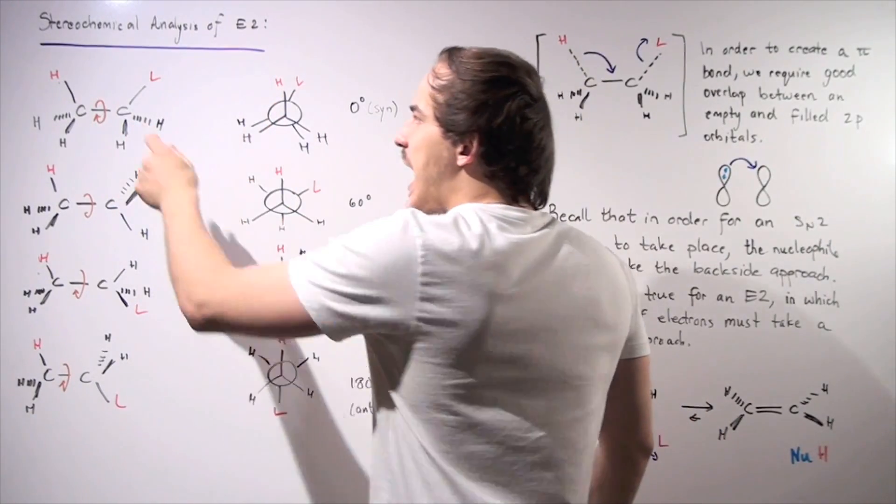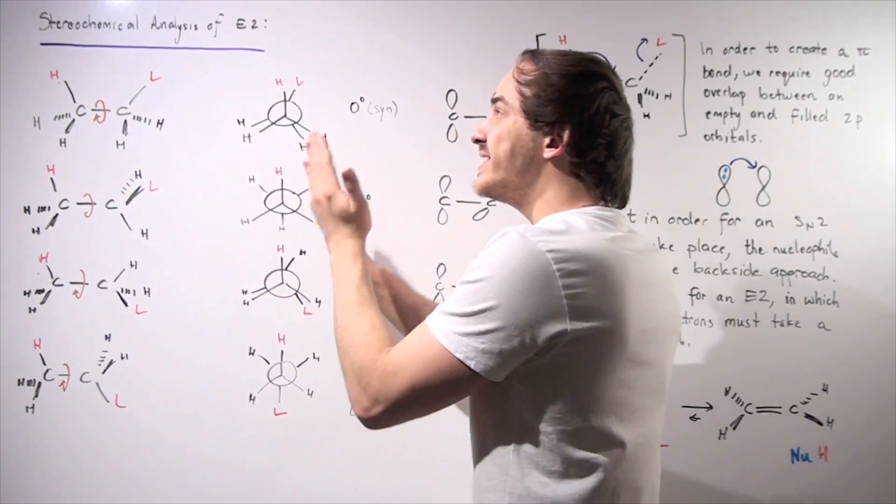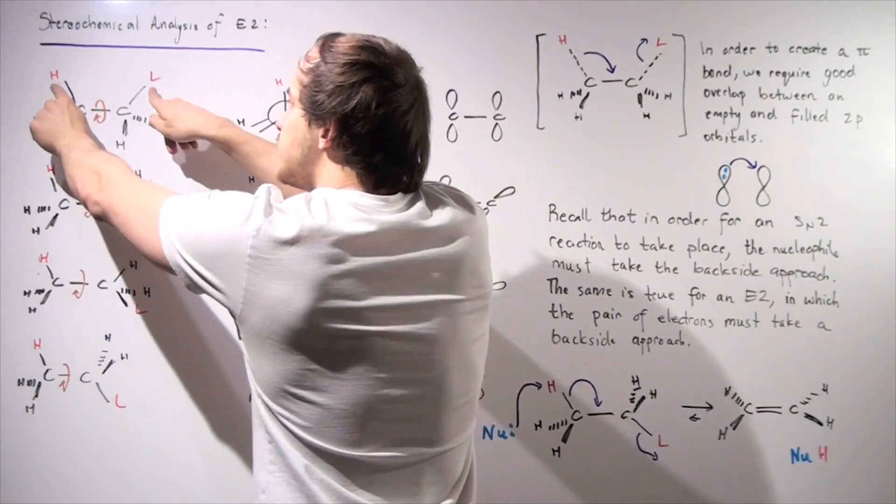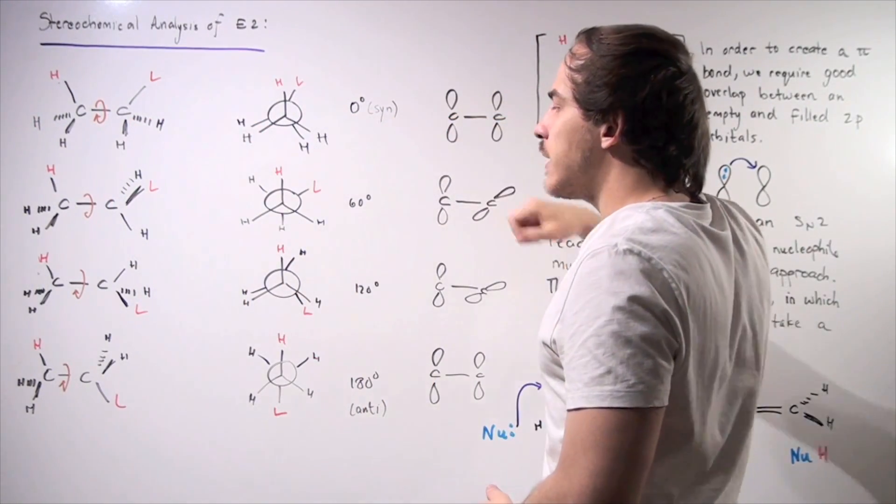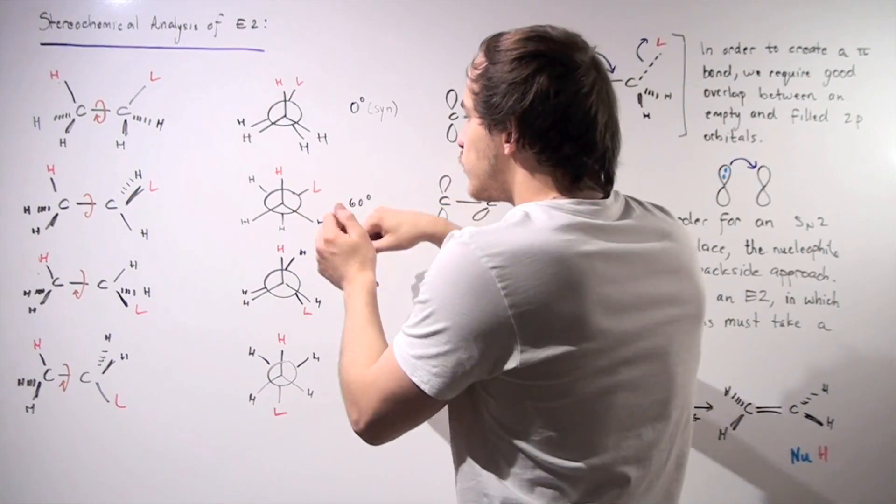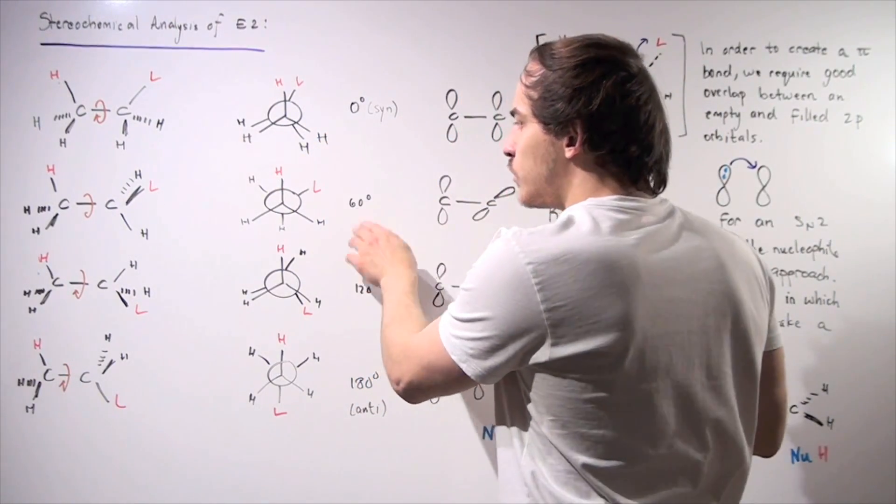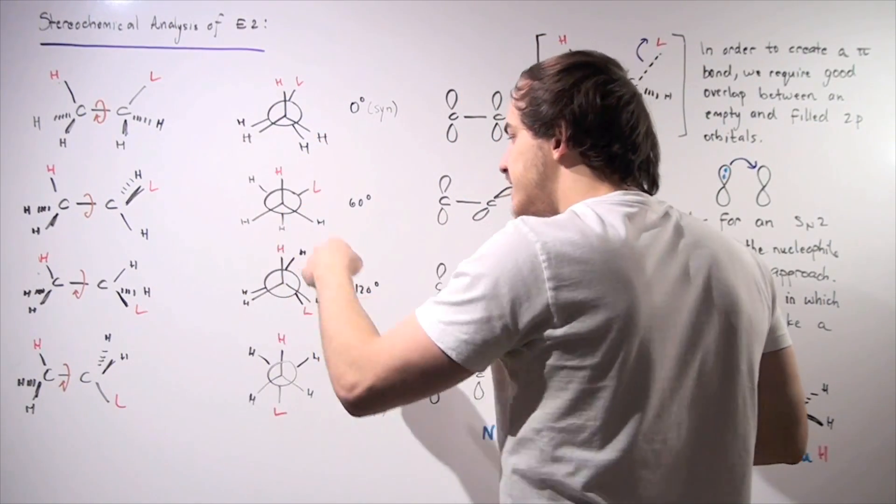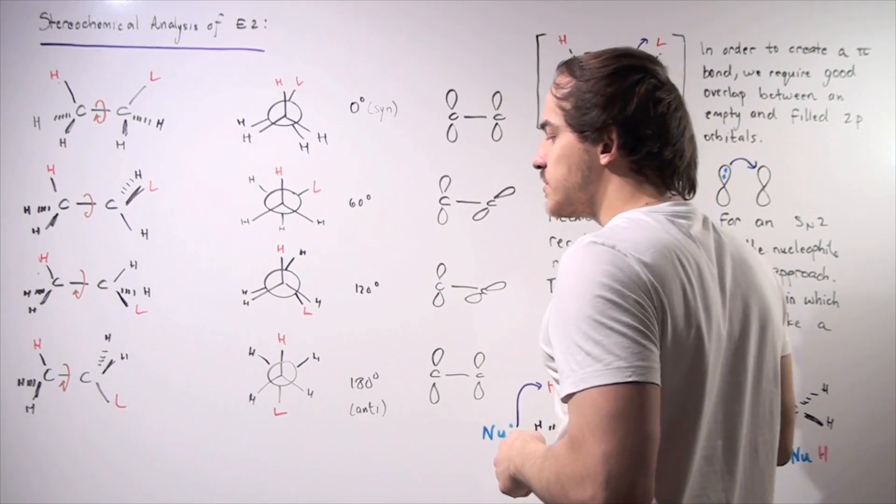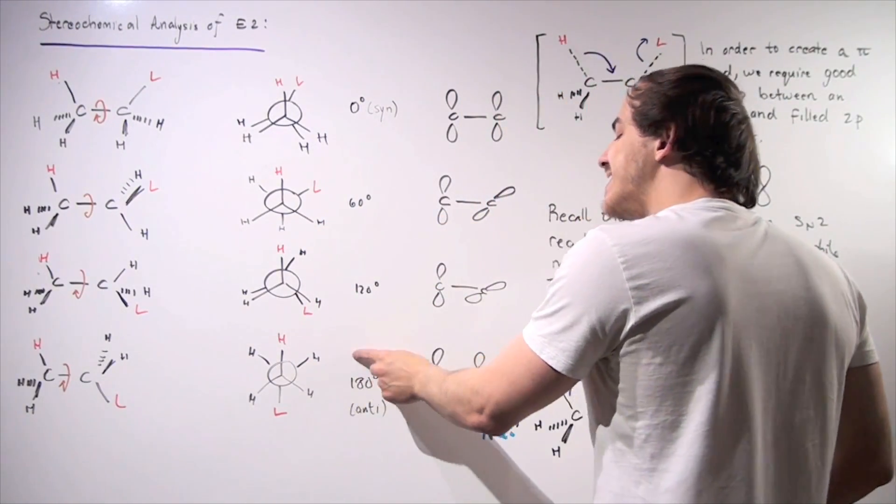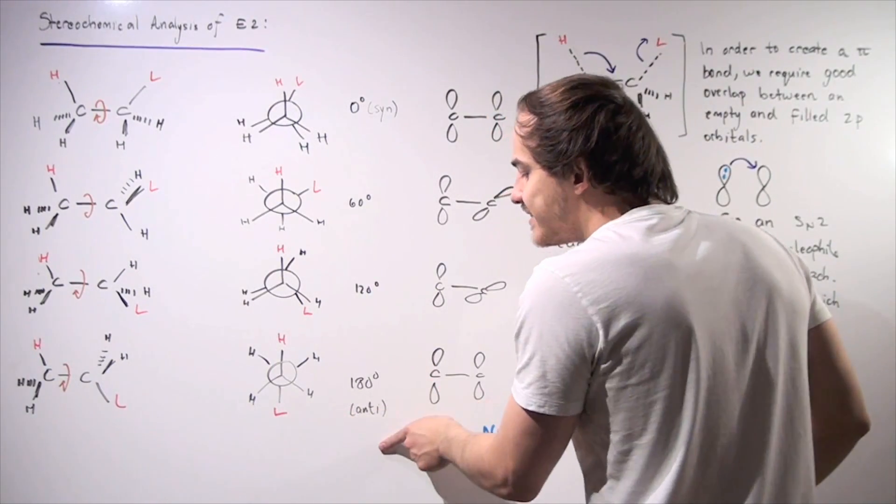So in this projection, our H and L atoms are on the same exact plane. These bonds are on the same plane, so we have zero degrees, also known as syn conformation. Next, we have 60 degrees apart, then 120 degrees apart between our atoms. And next, we have 180 degrees apart, which is also known as the anti.